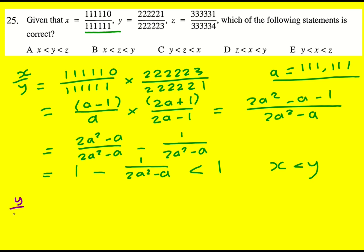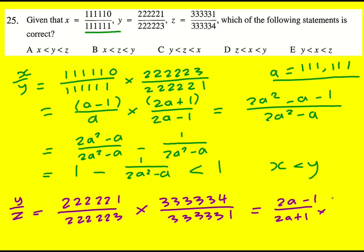Next up, I'm going to do y divided by z. So again, instead of dividing, I'm going to times by the reciprocal. And I'm going to keep with the a. So now I've got 2a minus one over 2a plus one times 3a plus one over 3a minus two.